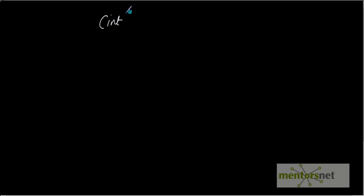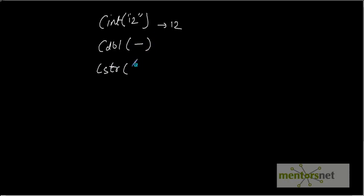You can also convert data from one type to another using built-in functions in VBScript. For example, CInt converts a value to integer — passing 12 returns 12 as an integer. CDbl converts a value to double. CStr converts a value to string — passing 12 returns '12' as a string. That's all about data types in VBScript. Thank you.